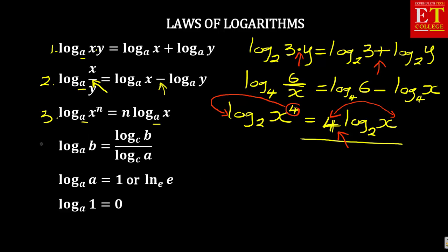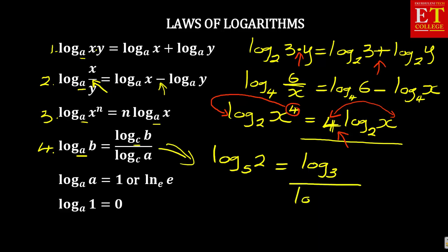Now let us look at law number 4. It says: log base A of B is the same as log base C of B over log base C of A. This law is very important whenever you want to change the base. For example, suppose you are given log base 5 of 2 and you want to change it to log base 3. You write log base 3 of 2 over log base 3 of 5 — that is how you change from base 5 to base 3.